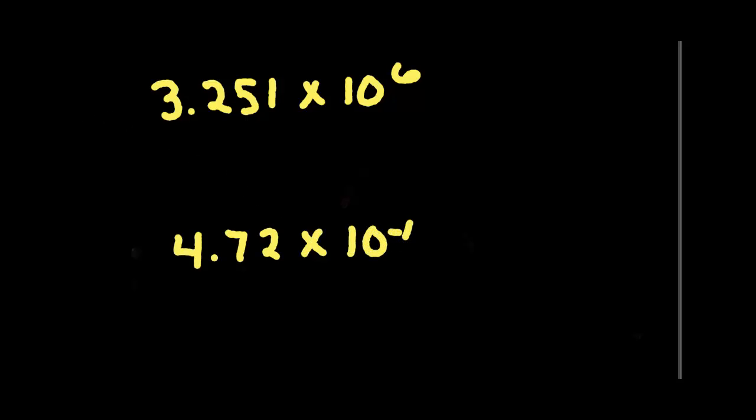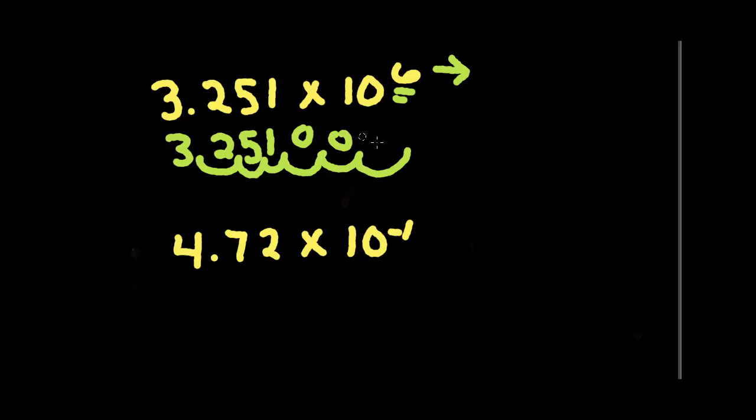So for the first one, we are going to take our decimal point. Let's rewrite this for a second. And we're going to move it six places. Since it's a positive number here, we're going to move it to the right. So we're going to bunny hop six places. So 1, 2, 3, 4, 5, 6. So we need to add three zeros.